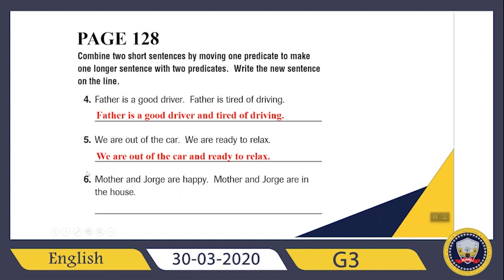Good job. The sixth sentence is kind of different. Let's check: Mother and George are happy. Mother and George are in the house. Which part is the common part? Mother and George are. After 'are', I put 'happy' in the first sentence and 'in the house' in the second. So the new sentence is: Mother and George are happy and in the house. Good job.